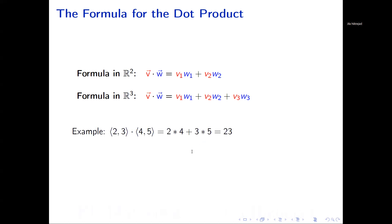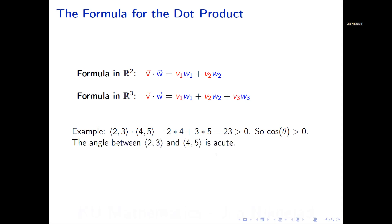Let's do an example in R2. The dot product of the vector (2, 3) and the vector (4, 5) is two times four plus three times five, which equals 8 plus 15, equaling 23 — and that is a scalar. Since this scalar is greater than zero, the angle between these two vectors is acute. You can also use the arccos formula we provided to compute that exact angle.